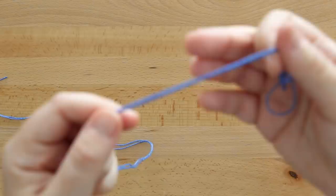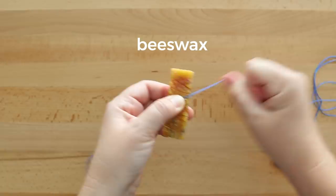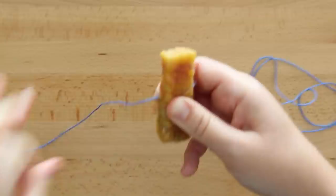Starting with about an arm's length of cotton craft thread—you can use any thread of your choice—I'm going to double it up so it's a bit thicker, then pulling it across beeswax a couple of times. This will prevent fraying and tangling, which makes it a lot less frustrating to bind with.